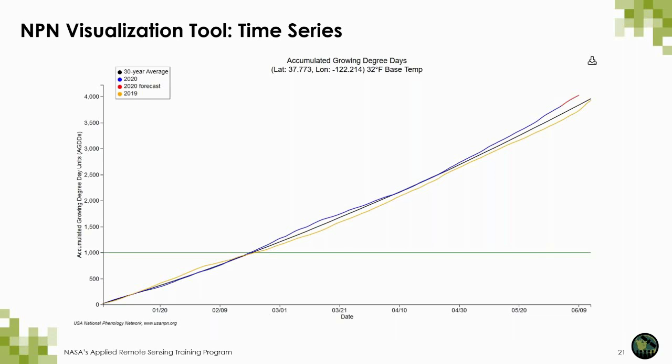With the time series option, you can answer the question: how fast is it warming up this year where I live? What you can see here is a time series of growing degree days for Oakland, California. This graph shows the daily accumulation of heat — also known as growing degree days — for the current year in Oakland, and compares it to previous years. The long-term average from 1981 to 2013 is shown in black, the current year is shown in blue, the prior year in orange, and the prediction for the next six days is shown in red at the very end of the figure.